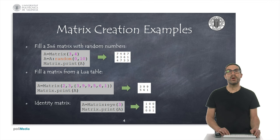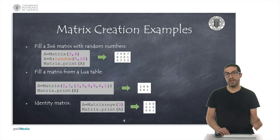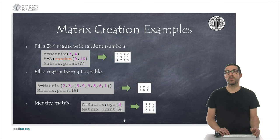If we call the matrix constructor and pass only the two dimension arguments, it will create, by default, a matrix filled with zeros of the appropriate dimensions. There are other methods that can be used — for instance, the method ones, that will fill the matrix with all ones in all its elements.